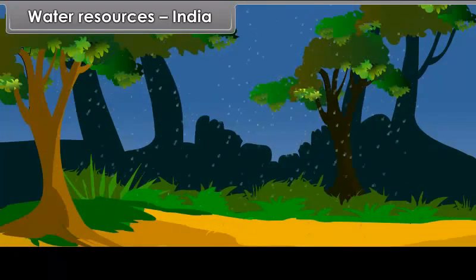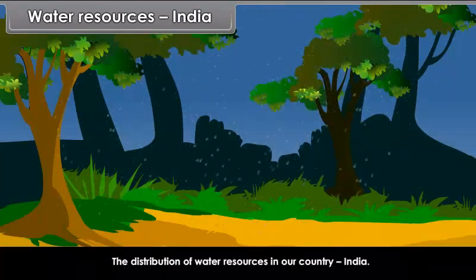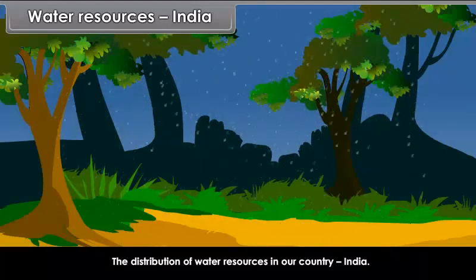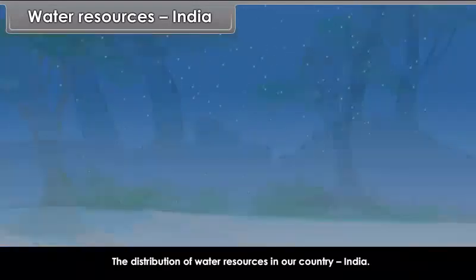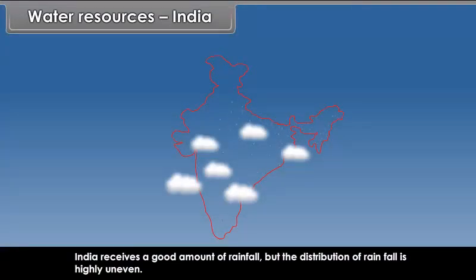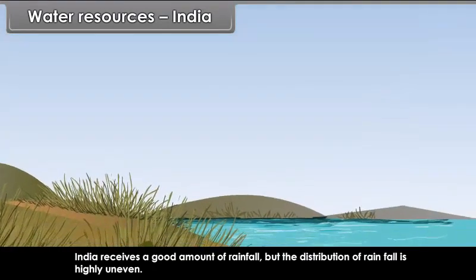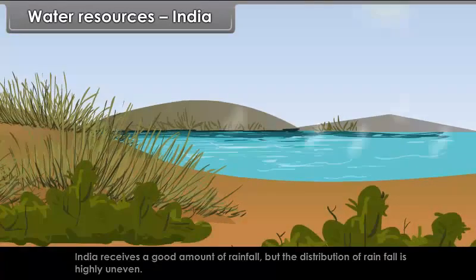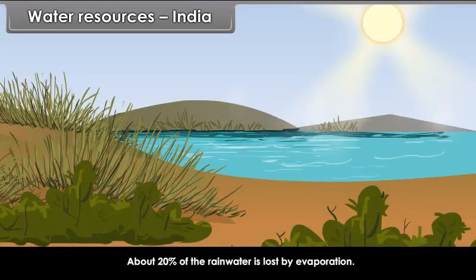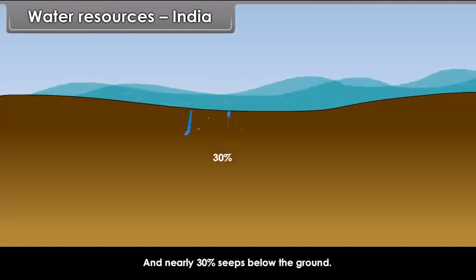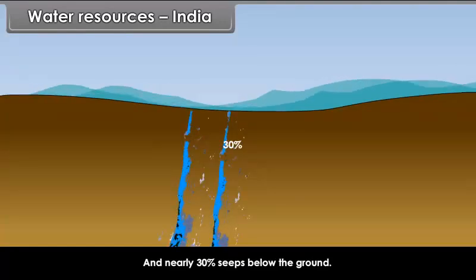Water Resources - India. Here we will study the distribution of water resources in our country, India. India receives a good amount of rainfall, but the distribution of rainfall is highly uneven. About 20% of the rainwater is lost by evaporation and nearly 30% seeps below the ground.